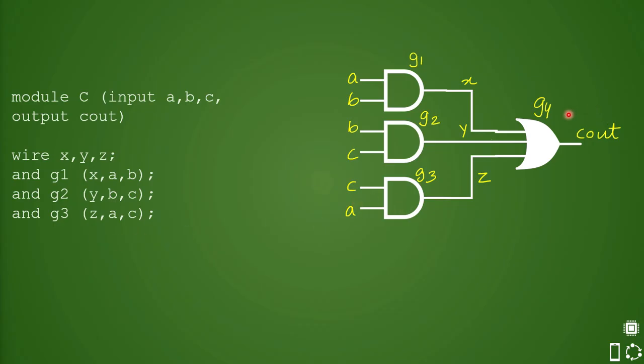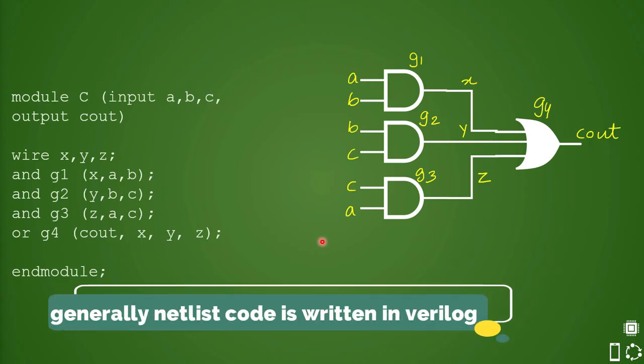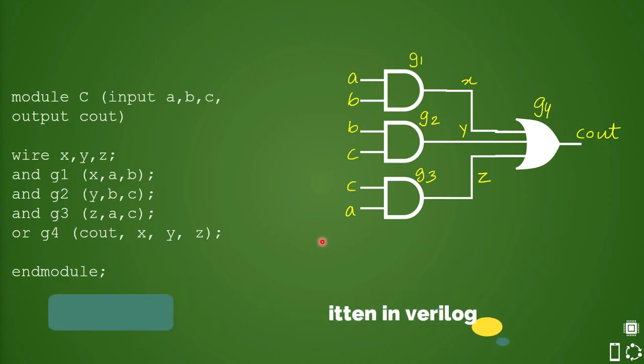Now it will define this OR gate. So it will say OR and then g4, that is the name of the gate, then output first. So c_out and then three wires which are connecting: x, y, and z, and then end module. This means this module definition is now complete. This is how all netlists are defined and how connectivity information is written in the netlist.